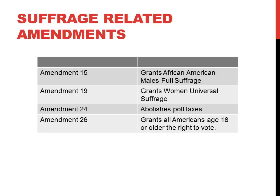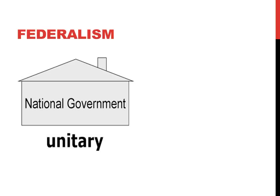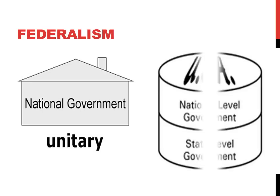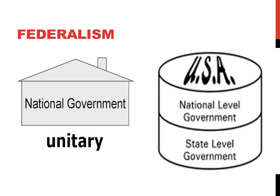Along with separation of powers and checks and balances, federalism is the other most important principle of the U.S. Constitution that AP Government students need to understand. Federalism differs from the unitary system used by many other countries, in which only the national government is recognized in the constitution, and state or local governments receive their powers only from what is handed down by the national government. Federalism, as used in the United States, includes multiple levels of government that each have their own distinct powers and are also able to share some powers.